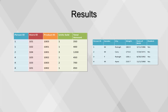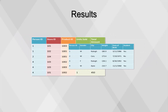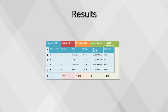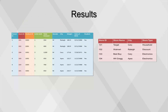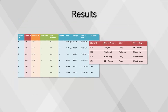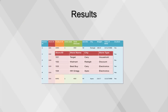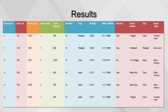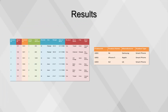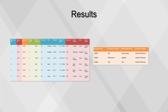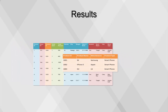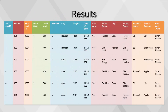First, we will join the transaction fact table with the person dimension. Next, we will join the results from the previous join with store dimension. Finally, we will join our results from the previous join with product dimension. Notice how each step creates a progressively larger table.